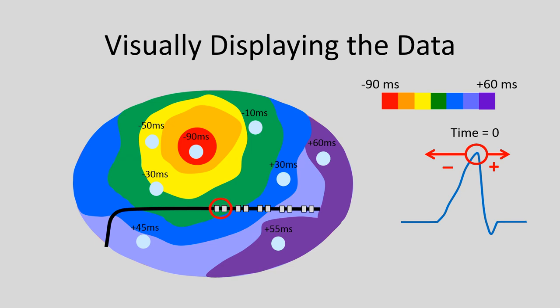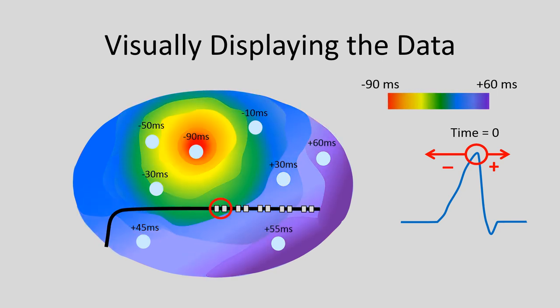The mapping system will usually blend and smooth these colors one into another, and you'll end up with a schema that directs your eye and your catheter to the location that is earliest — again, with the goal of identifying the origin of a tachycardia, usually for the purpose of catheter ablation and cure.